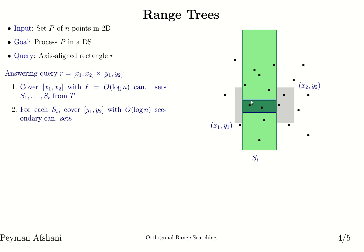Let's look at one such canonical set stored here. To answer queries, we look at all the secondary canonical sets and either sum up their sizes or list the points stored in their union. The important observation is that the query time is log squared n. In other words, the number of canonical sets is log² n — this is because we have log n canonical sets to begin with, and every canonical set leads to log n additional secondary canonical sets. So the total number of secondary canonical sets is log n times log n, which is log² n.